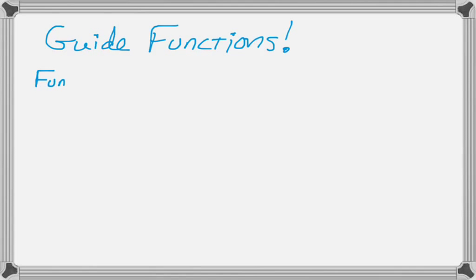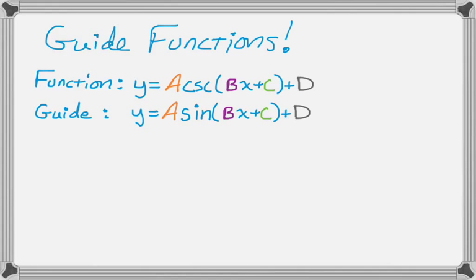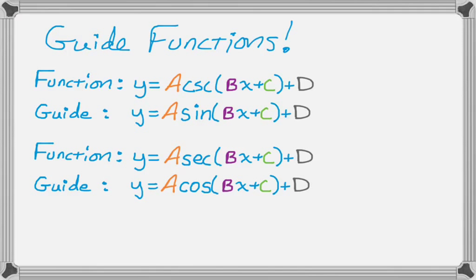Because what we do is we start out with a particular function, so say we have y equals A cosecant of Bx plus C plus D. That's the general form that we looked at before. Well, that has what we call a guide function, and the guide function in this case would just be sine. And then the same sort of thing, if we have a secant function, then the guide function that we're going to use works out to be a cosine function.